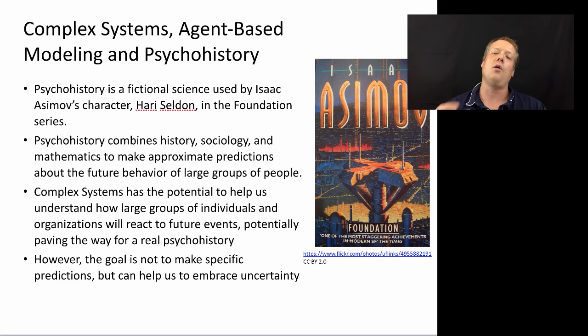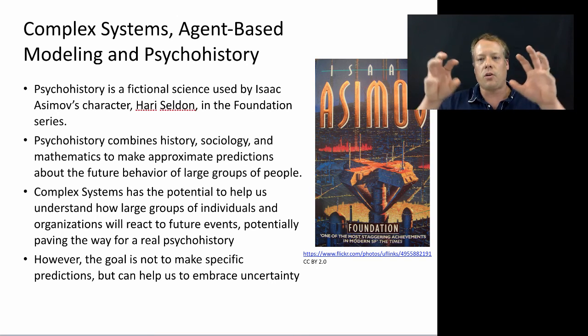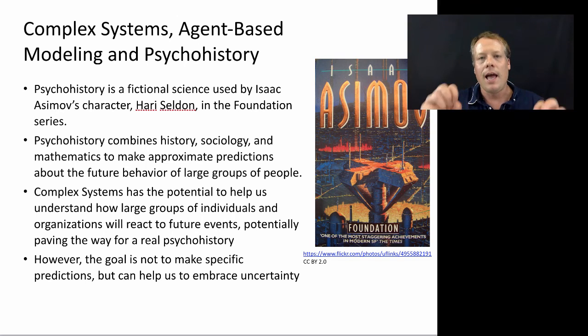Here, the idea is that if you know enough about the way history and sociology and other aspects of human social psychology work, you could understand from the current status of the world how the world is going to unfold in the near future. And that's the fictional science of psychohistory.